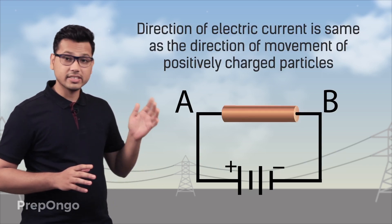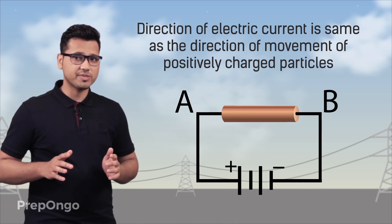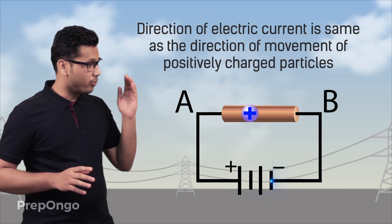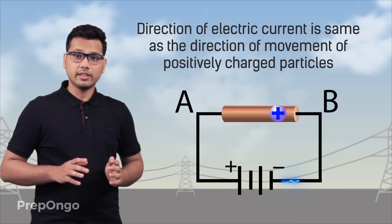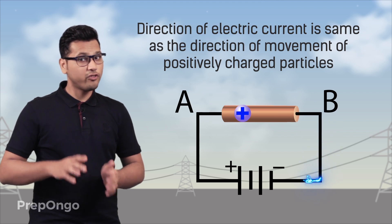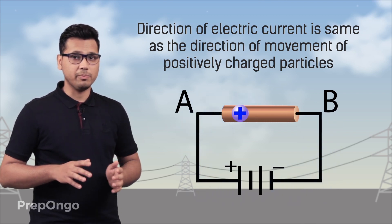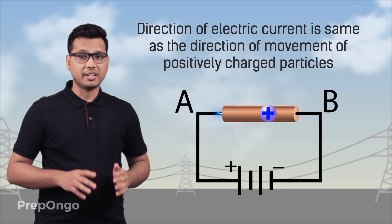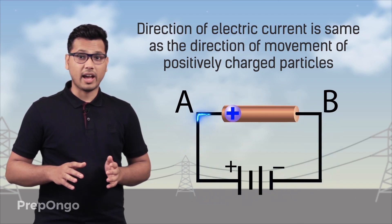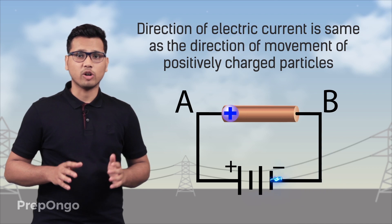When electric current was discovered, it was assumed that it was due to the flow of positively charged particles. So the direction of electric current was kept the same as the direction of flow of positively charged particles. If we look at this circuit and the positively charged particles are moving from point A to point B, then the electric current flowing in this conductor will be from point A to point B — that is, the direction of electric current is the same as the direction of movement of positively charged particles.